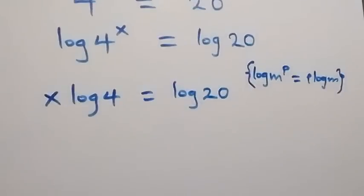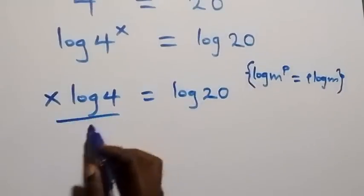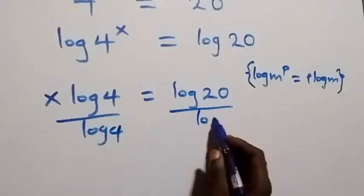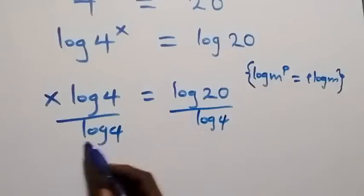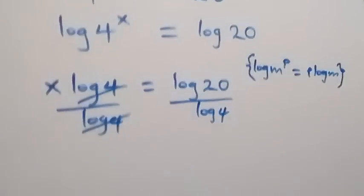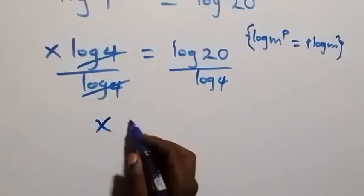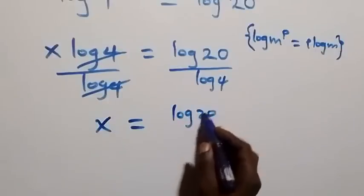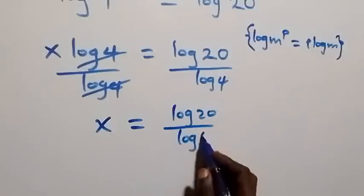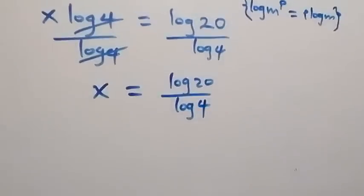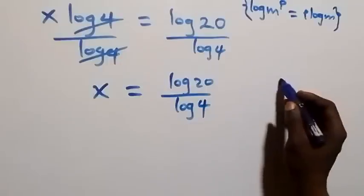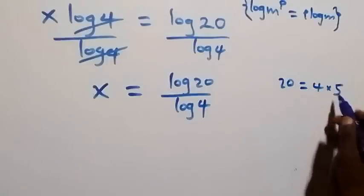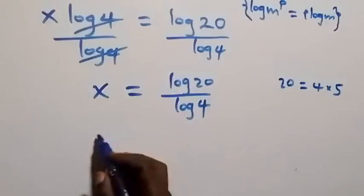In the next step, we divide both sides by log 4. The log 4 terms cancel each other on the left, and we are left with x equals log 20 over log 4.